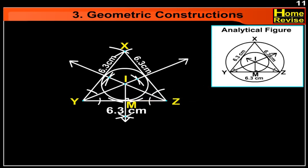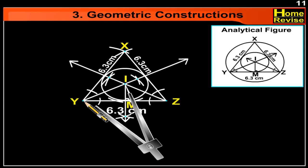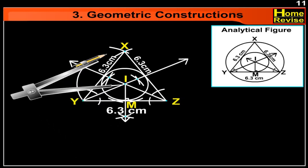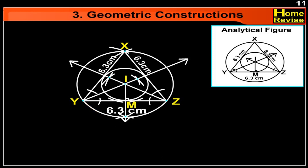We know that the incenter and circumcenter for an equilateral triangle are the same. Therefore, with I as the center and IY as the radius, let us draw another circle. This is the circumcircle of equilateral triangle XYZ.